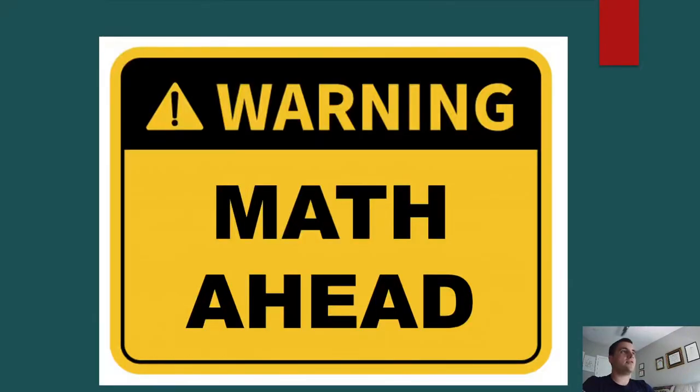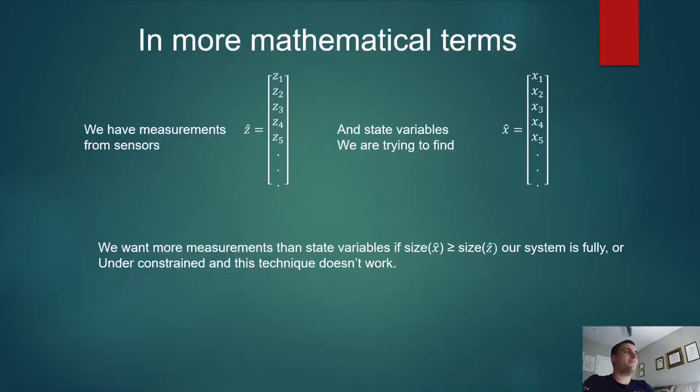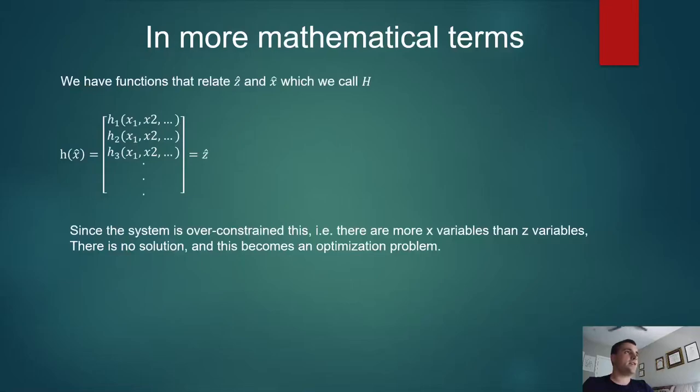There's no way around it. This talk is very math heavy. I had to learn everything about InfoSec on my own, so InfoSec people can learn some math now. It's my chance for revenge. In more mathematical terms, we basically have a bunch of measurements, which we give by the vector z, and we are trying to find state variables x that we can describe those z's in terms of. For this technique to work, because it is a numerical method, we need more z's than x's. If the sizes are equal or less than, then this doesn't work, because our system is either fully constrained or under-constrained, and we can't make a prediction on whether or not our data is good or bad. To put that another way, we compute a system of functions, h of x, which is a whole bunch of functions that are comprised of our state variables that give us our measurements.